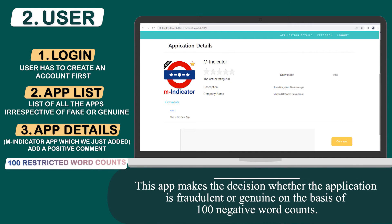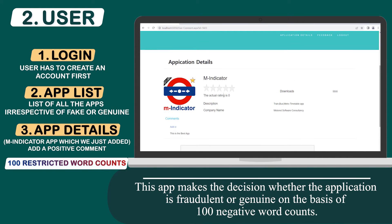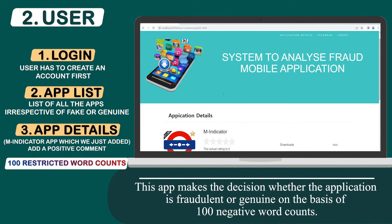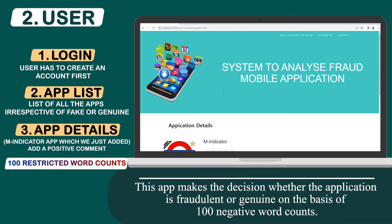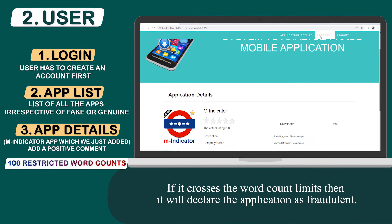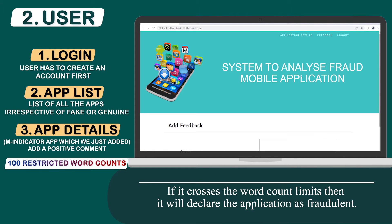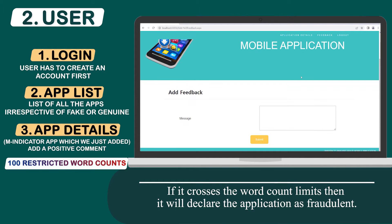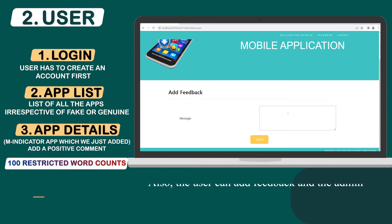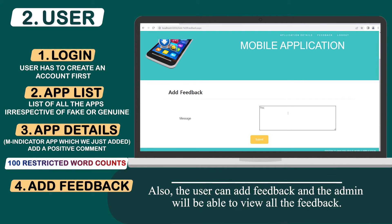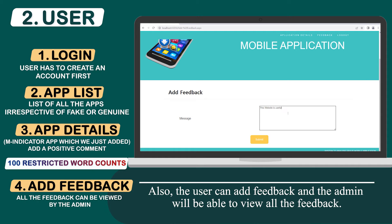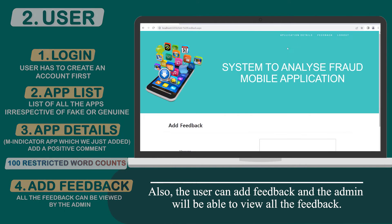This app makes the decision whether the application is fraudulent or genuine on the basis of 100 negative word counts. If it crosses the word count limit, then it will declare the application as fraudulent. The user can also add feedback, and the admin will be able to view all the feedback.